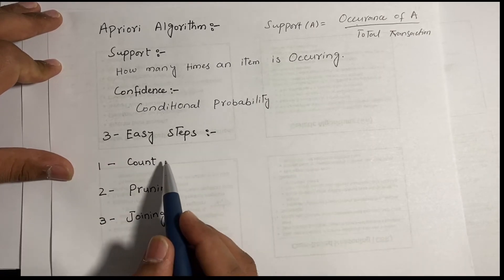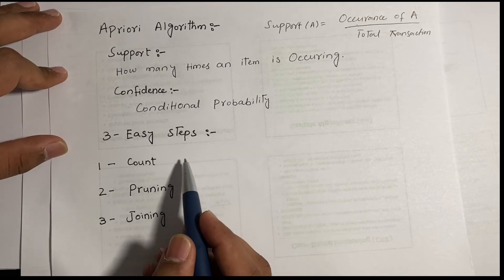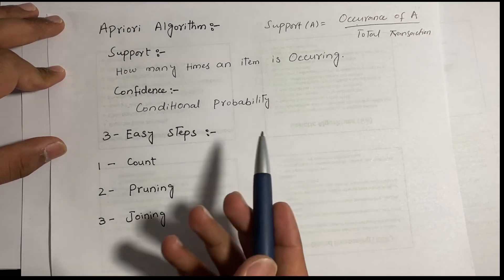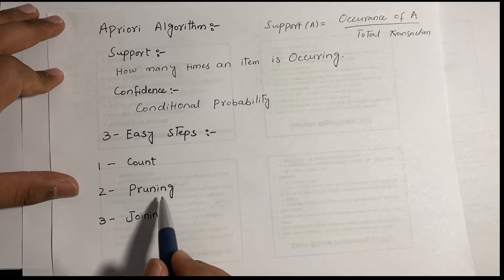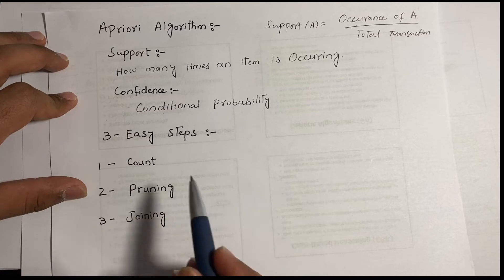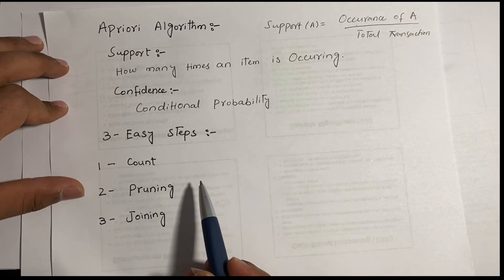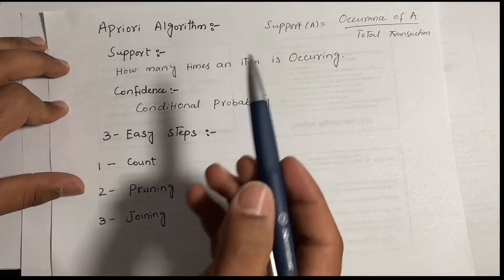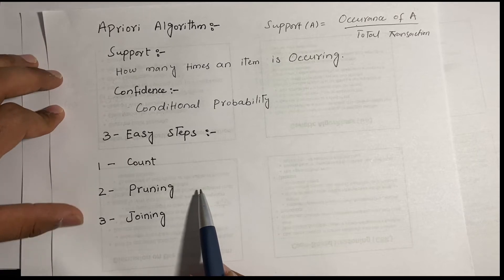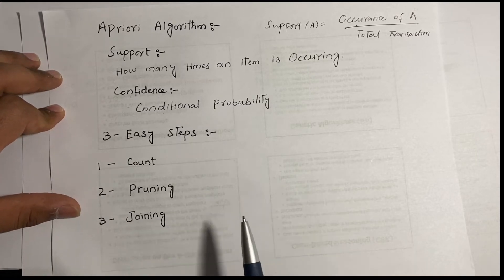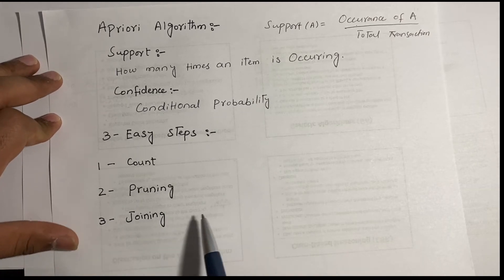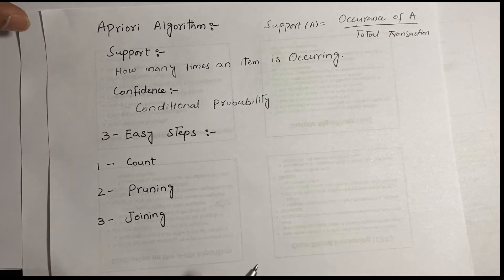To solve the Apriori algorithm we have three easy steps. Step one is counting — we count how many times each item is occurring in transactions. Step two is pruning — we check if the occurrence of an item is equal to the minimum support; if not, we remove it from the database. After pruning, step three is joining the remaining items.